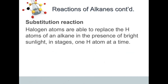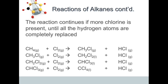The other reaction that alkanes undergo is called a substitution reaction, just as the name suggests. We use halogen atoms to replace the hydrogen atoms of an alkane. This must happen in the presence of sunlight, or UV light, and it takes place in stages — one hydrogen atom at a time. If more chlorine is available, the process continues until all the hydrogen atoms are completely replaced.